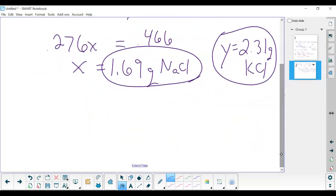Well, sodium chloride is 1.69 grams over 4, and that's going to give us 42.3 percent.